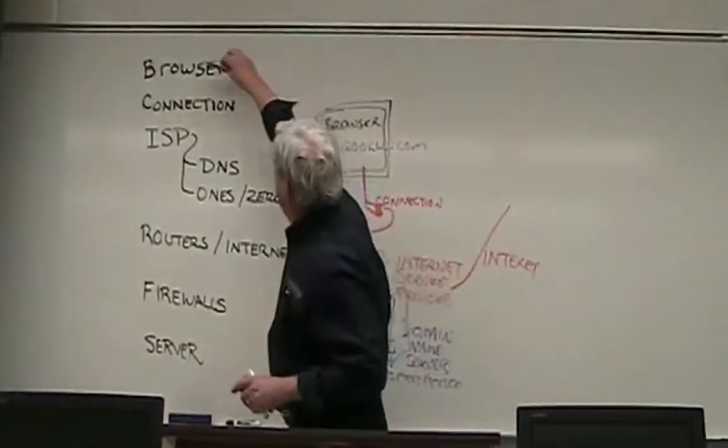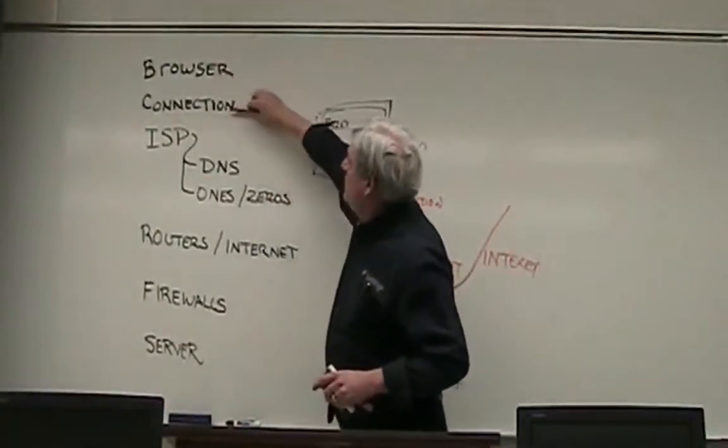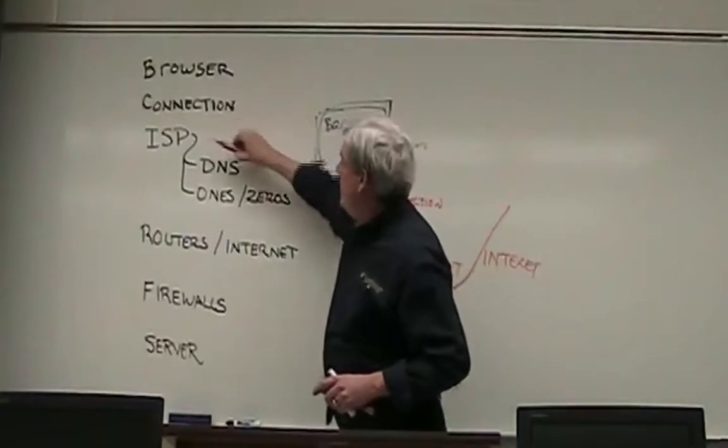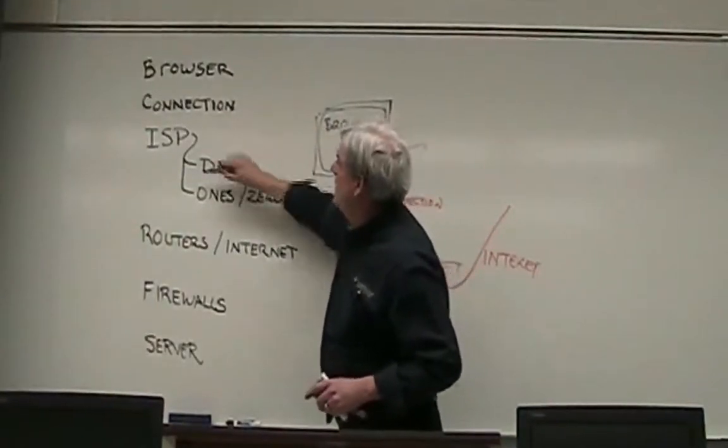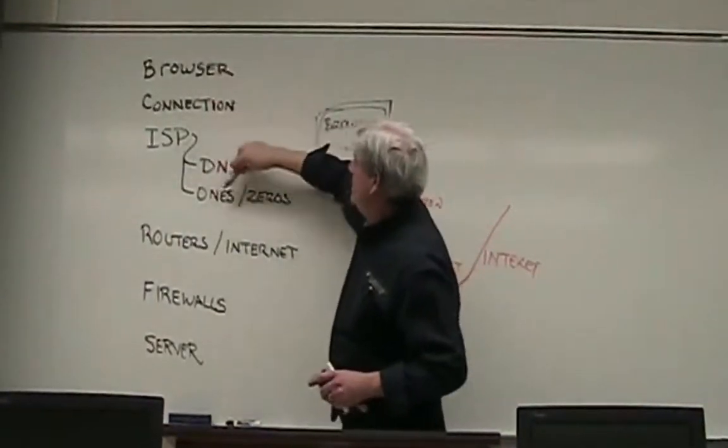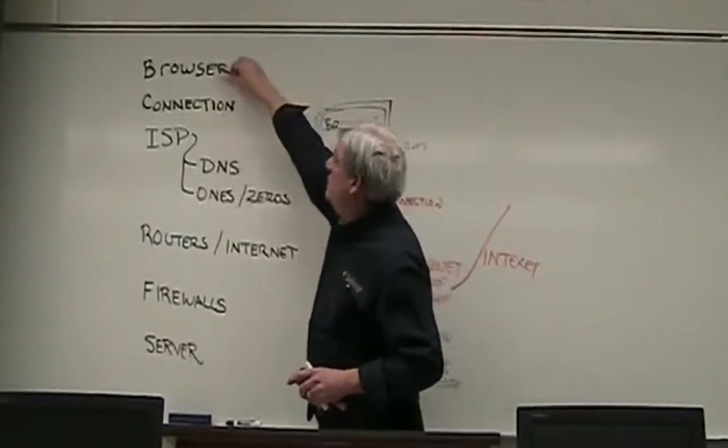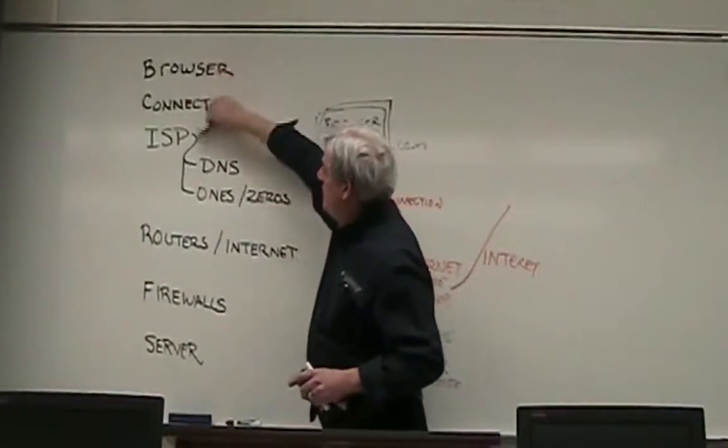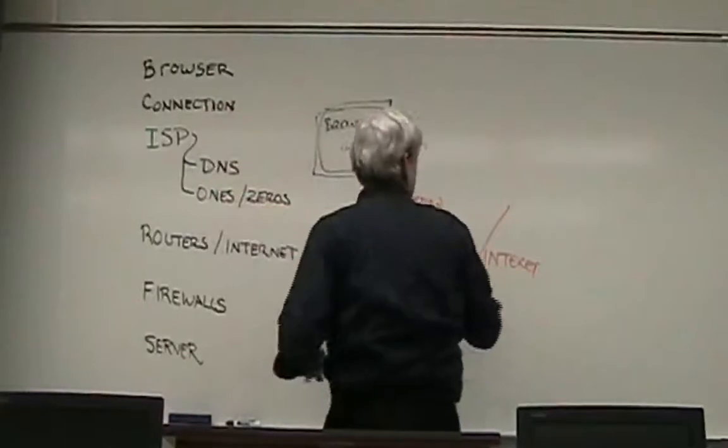So here's the steps we've done. We've gone from the browser, we've set up our connection, our internet service provider. It checks the DNS, goes back, changes everything into ones and zeros to get the address, comes back, and then it goes down through a series of routers.